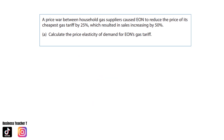Our next question: a price war between household gas suppliers caused EON to reduce the price of its cheapest gas tariff by 25%, which resulted in sales increasing by 50%. Calculate the price elasticity of demand for EON's gas tariff. You can pause the video now if you'd like to attempt the question.